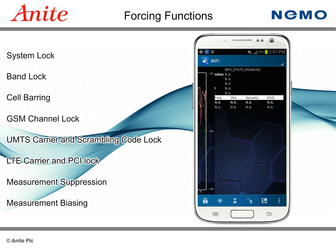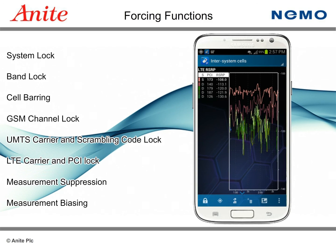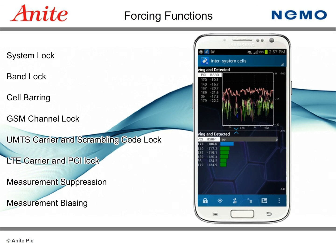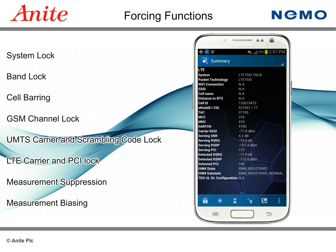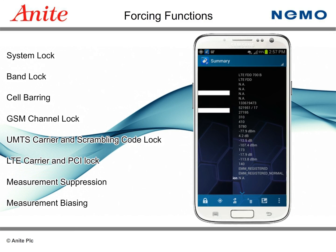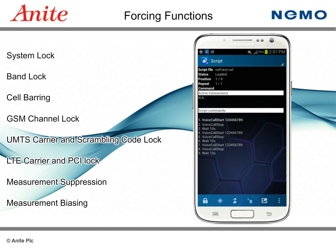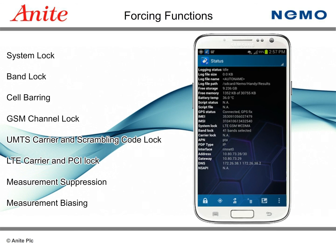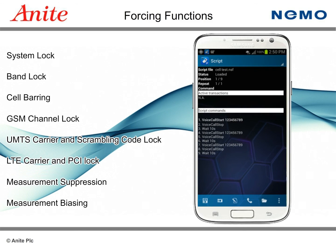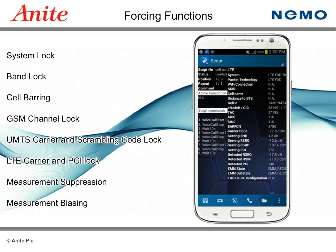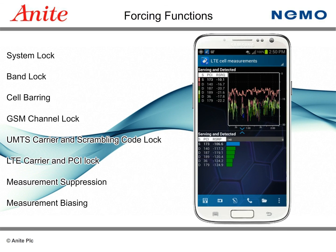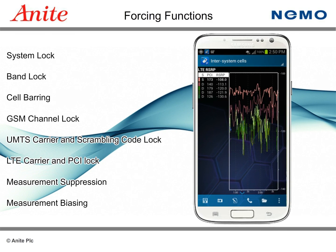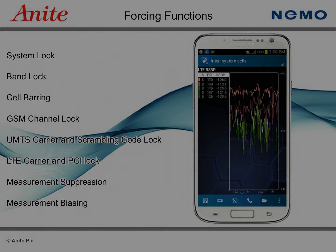These features make it easy to test specific cells in the network without worrying about the test system handing over to neighboring base stations. This enables more accurate testing, troubleshooting, and optimization of mobile networks, and improves the network's quality as well as the usability of mobile services.